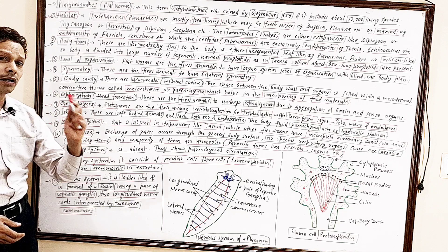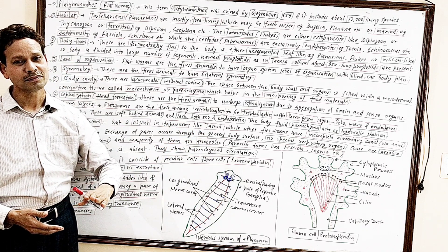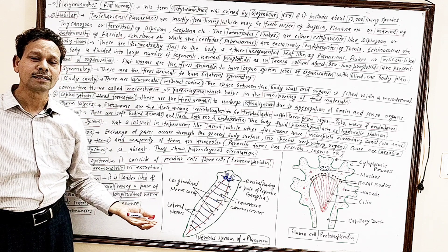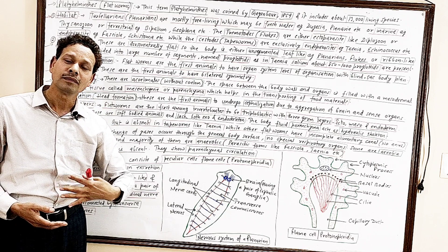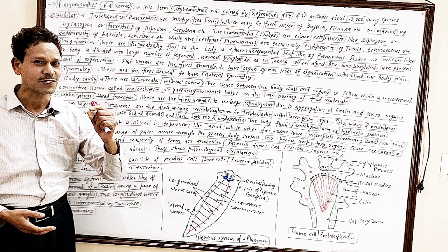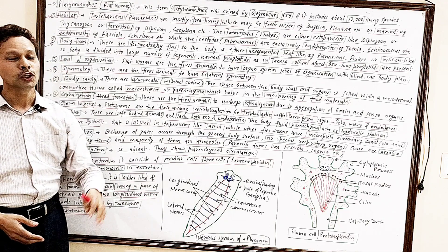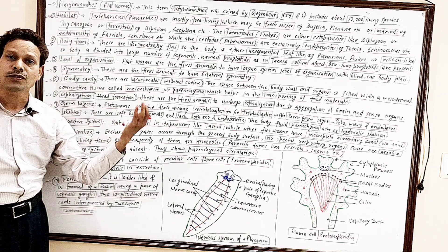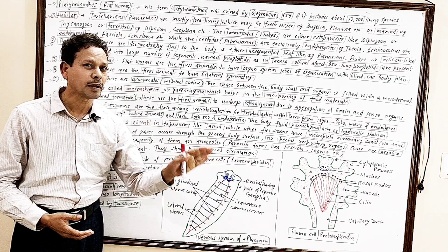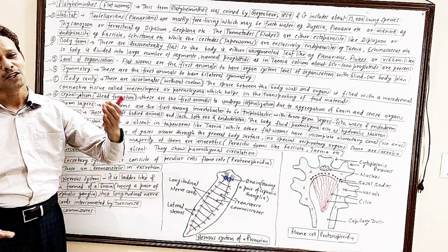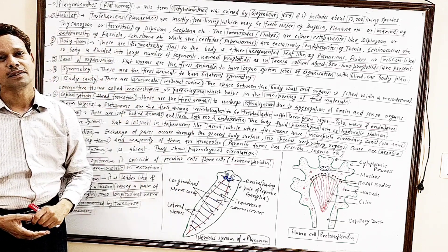Digestive system: flukes and tapeworms are parasites. In the case of tapeworms — Taenia and Echinococcus — there is no gut, no alimentary canal. The digestive system is completely lacking. In other forms where the alimentary canal is present, it is incomplete — there is only one opening, the mouth, which acts for both ingestion and ejection.